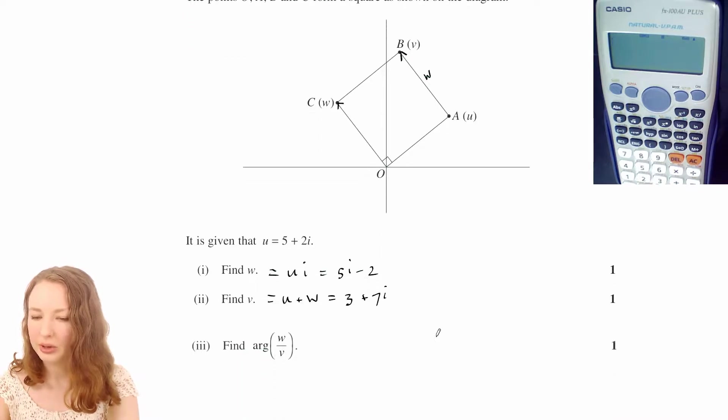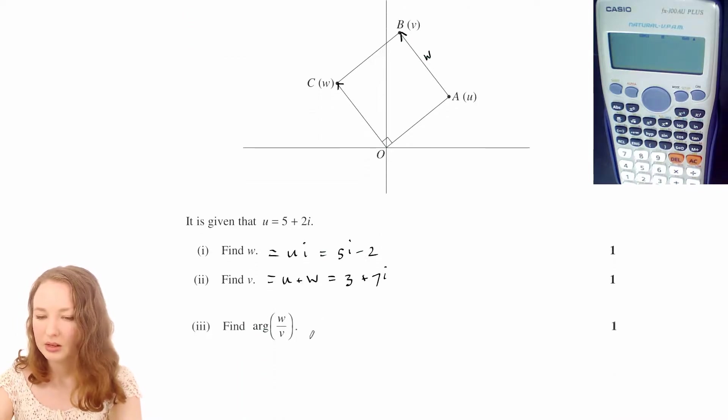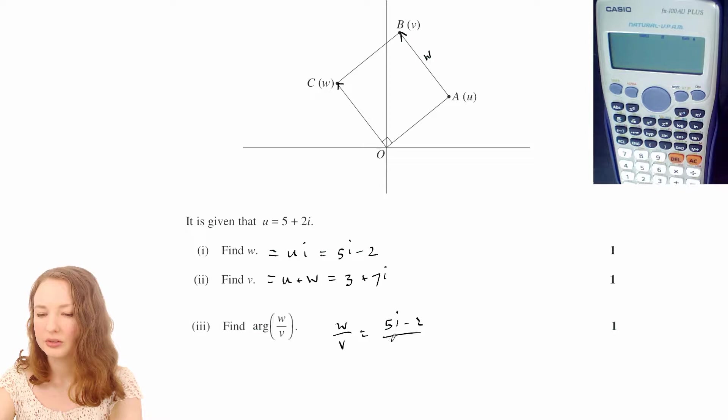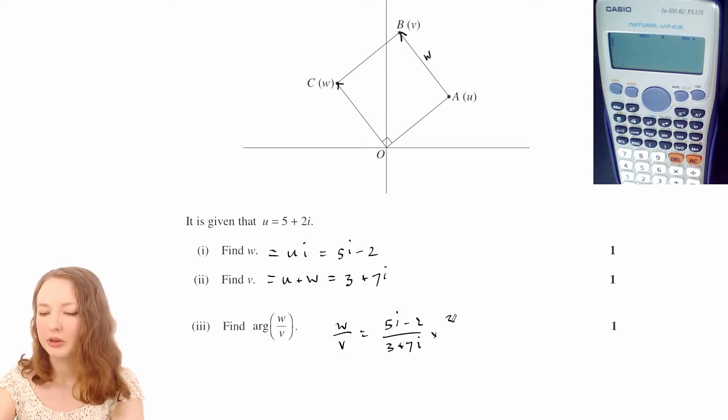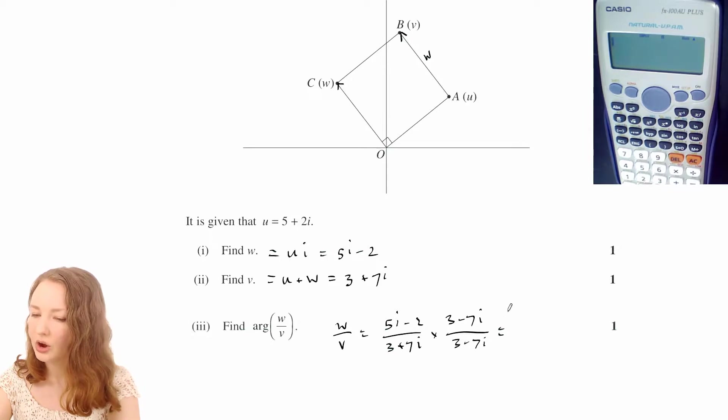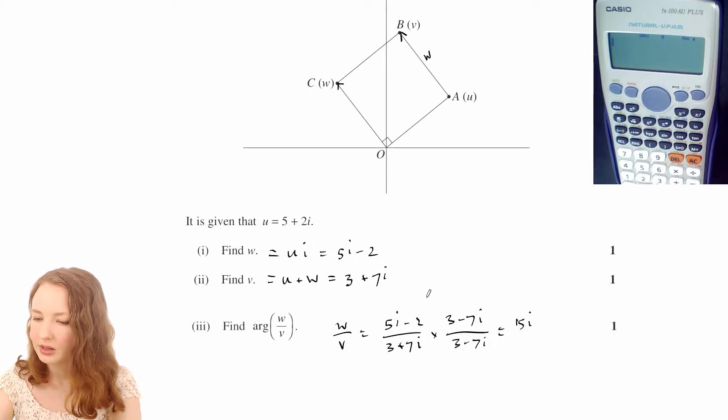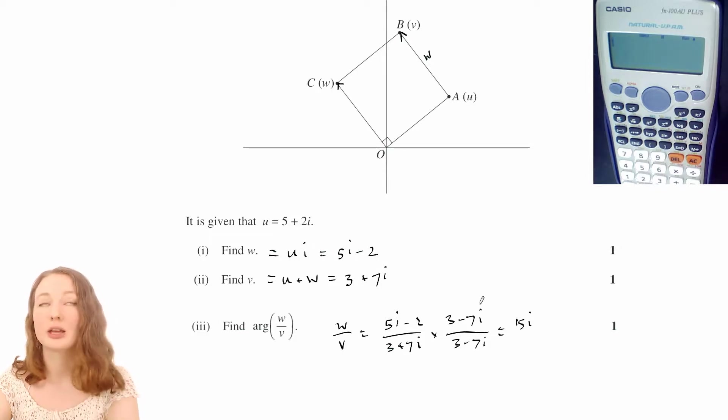And then part 3, so w over v, let's work out what that is. 5i minus 2 over 3 plus 7i. You can just do that on the calculator. I'll also go through how to do it manually. So we multiply by the complex conjugate of that, 3 minus 7i. And then on the top, that's going to give us 15i. And then you've got 5i times negative 7i. i's multiplied together make negative 1, and then that cancels with that negative, so we just get plus 35.